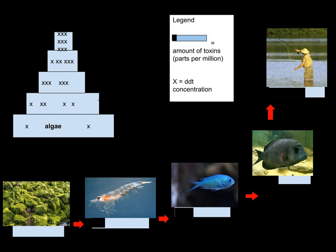Novel organic substances that biomagnify include: DDT, hexachlorobenzene, PCBs, toxaphene, and monomethylmercury. See also: Mercury in fish, methyl mercury, and dichlorodiphenyl dichloroethylene.